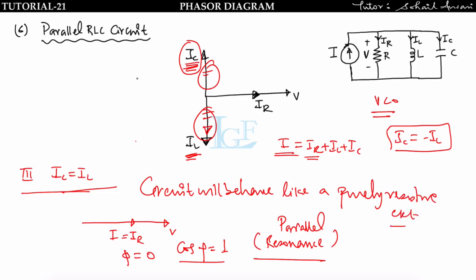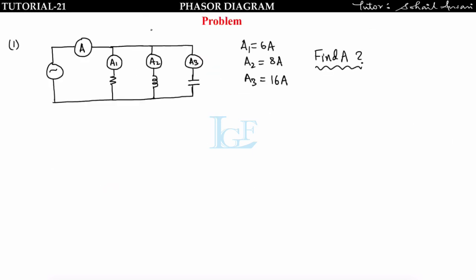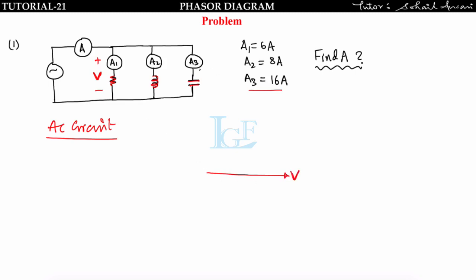Now let us solve some problems based on series and parallel RL, RC, and RLC circuits. In the first example, three ammeters are connected in parallel with R, L, and C, reading A1 = 6 A, A2 = 8 A, and A3 = 16 A. We have to find the net current. Since this is an AC circuit, we add currents in phasor form.